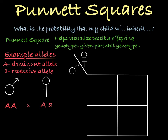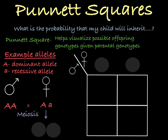This is a Punnett square. At the head of each column, you'll put each possible allele the mother could give a child in her egg. Remember that in meiosis, a person gives one of their two alleles to the gamete. So we see that this mother could either make an egg that carries the big A allele or an egg that carries the little a allele.